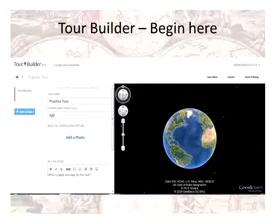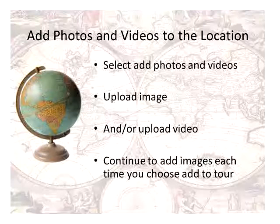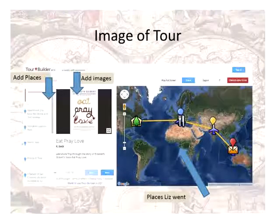Let's look at how Tour Builder works — it's such an easy tool. When you open it, you give the tour a name and put in your name. You can add photos and there's also a text area. You begin with your storyboard for the locations you want to map out. In my small teacher group, we tried something we were all reading at the time: Eat, Pray, Love.